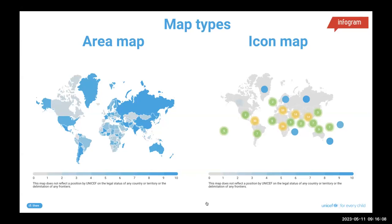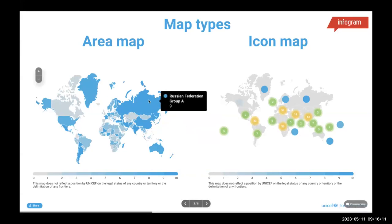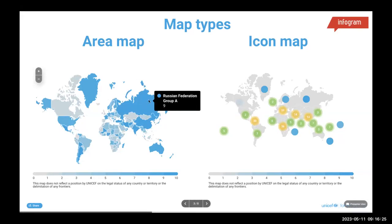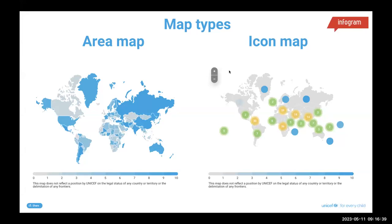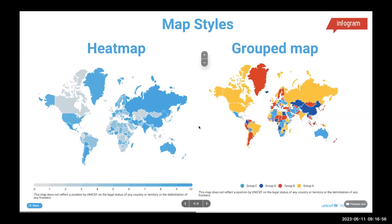We have two map types on Infogram. One is an area map — a map with predefined regions. These could be countries, municipalities or regions within a country, or groups of countries like continents. With an area map, you are visualizing data on something that applies to that entire territory. With an icon map, you are able to plot specific locations — whether cities, countries, villages, or specific coordinates or addresses across a city. You can pinpoint the location of a certain place on your Infogram map.